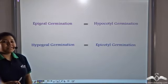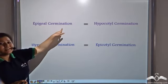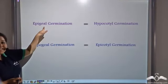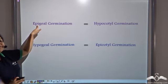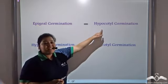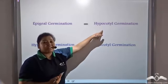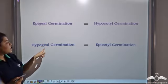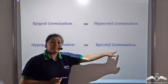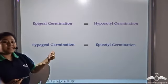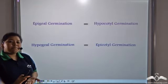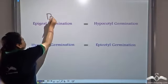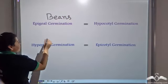Bean germination is epigeal and hypocotyl germination. Don't get confused between the two. Epigeal means the cotyledon remains above the ground, and hypocotyl means the stem remains below the cotyledon. In case of corn germination it gets reversed — it has hypogeal germination but epicotyl germination. The cotyledon remains below the ground but the stem grows above the cotyledon.